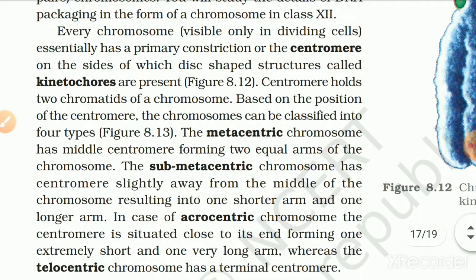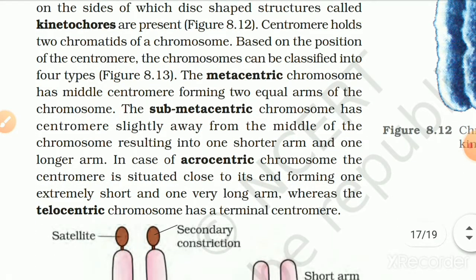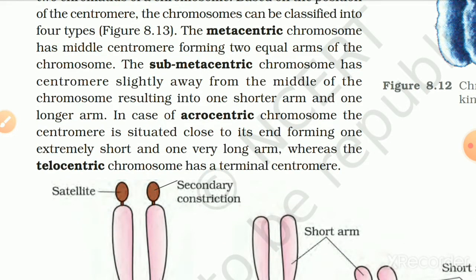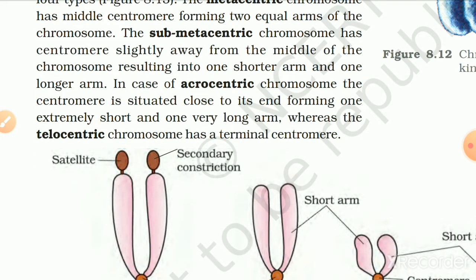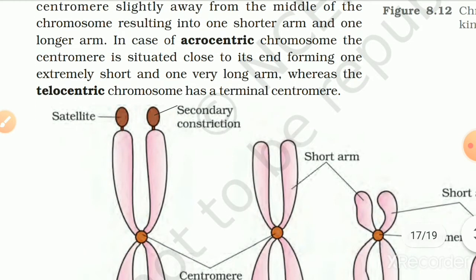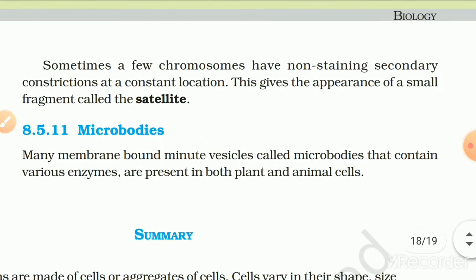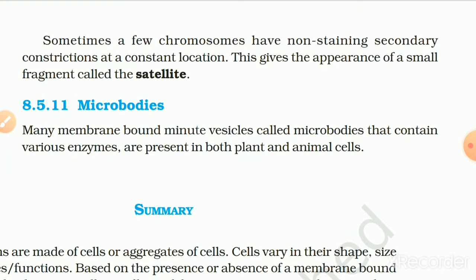Every chromosome has a primary constriction called the centromere, on the sides of which disc-shaped structures called kinetochores are present. Centromere holds two chromatids of a chromosome. Based on the position of the centromere, chromosomes can be classified into four types. The metacentric chromosome has a middle centromere forming two equal arms. The sub-metacentric chromosome has a centromere slightly away from the middle, resulting in one shorter and one longer arm. In acrocentric chromosomes, the centromere is situated close to the end, forming one extremely short and one very long arm. The telocentric chromosome has a terminal centromere. Sometimes a few chromosomes have non-staining secondary constrictions at constant locations, giving the appearance of a small fragment called the satellite.